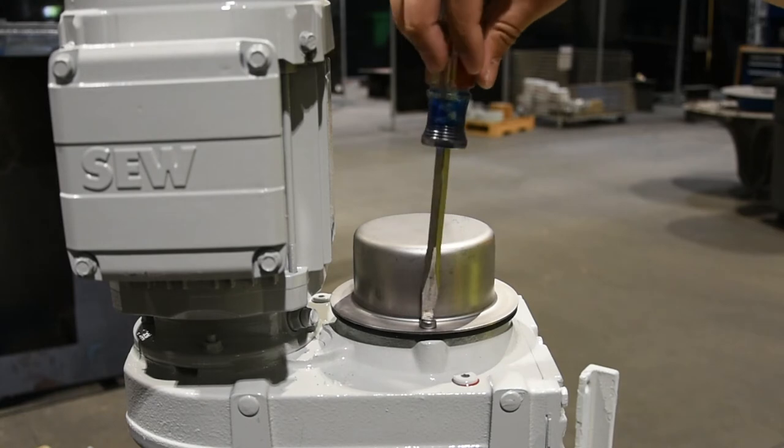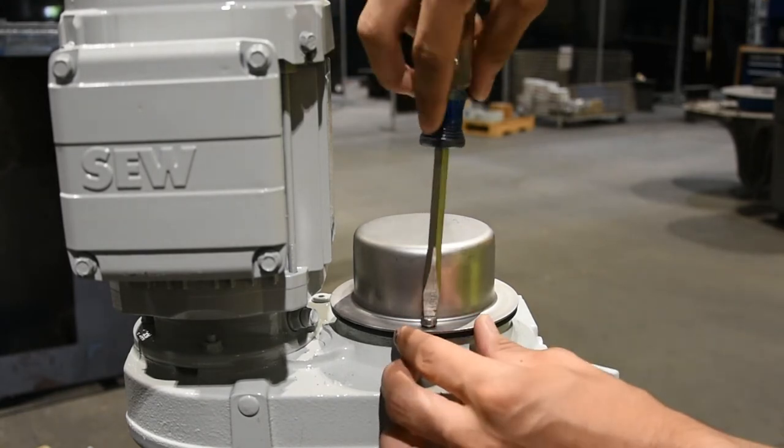First, use the flathead screwdriver to remove the rain cover located on top of the helical gearbox.